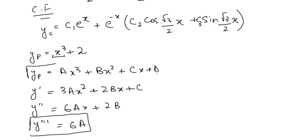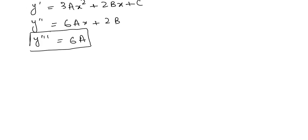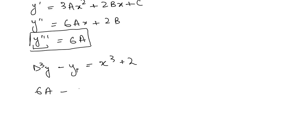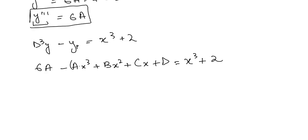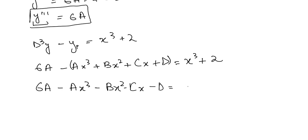Now let's substitute into our equation (d³ − 1)y = x³ + 2. This gives d³y − y = x³ + 2. In place of d³y we write 6A, and in place of y we substitute y_p, giving us 6A − (Ax³ + Bx² + Cx + D), which expands to 6A − Ax³ − Bx² − Cx − D.